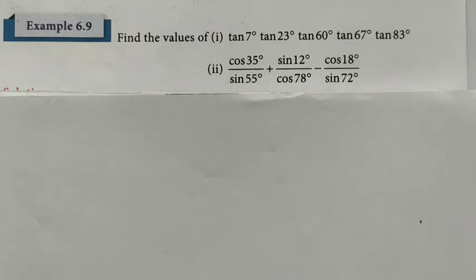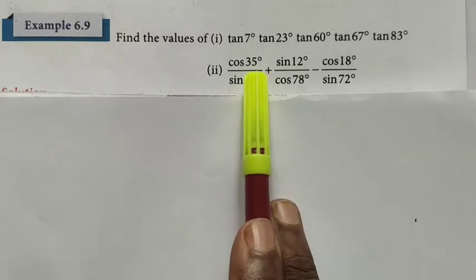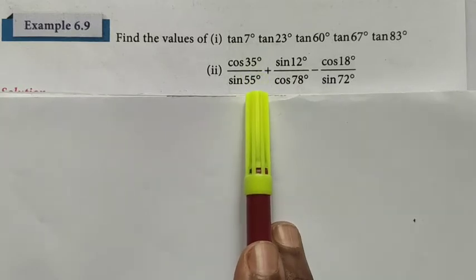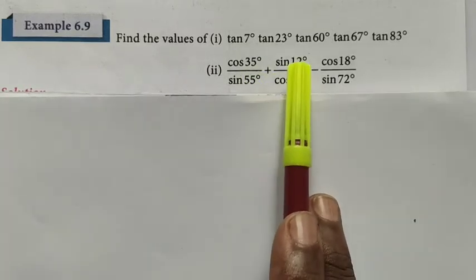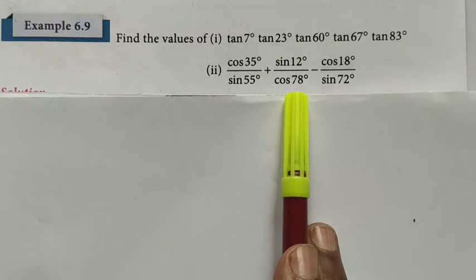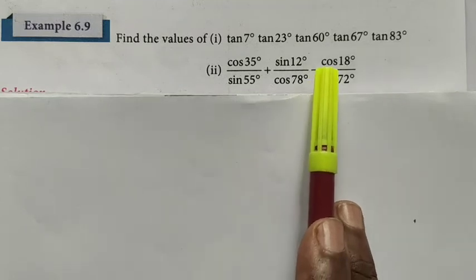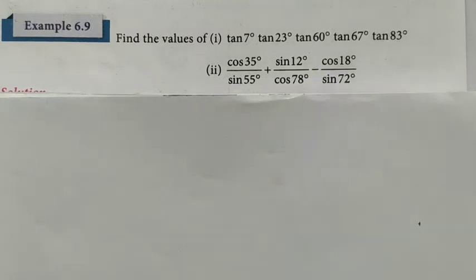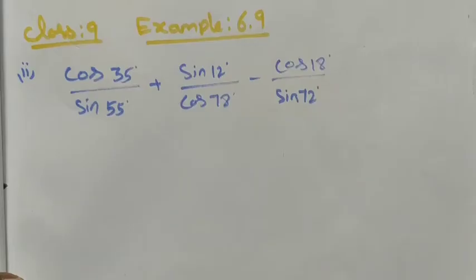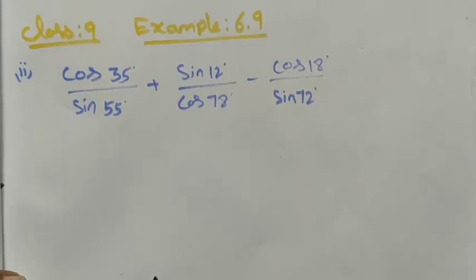Hi students, Class 9 Example 6.9. Find the value of... Here we are going to see the second roman number. The second roman number is given as cos 35 degree divided by sin 55 degree plus sin 12 degree divided by cos 78 degree minus cos 18 divided by sin 72 degree.